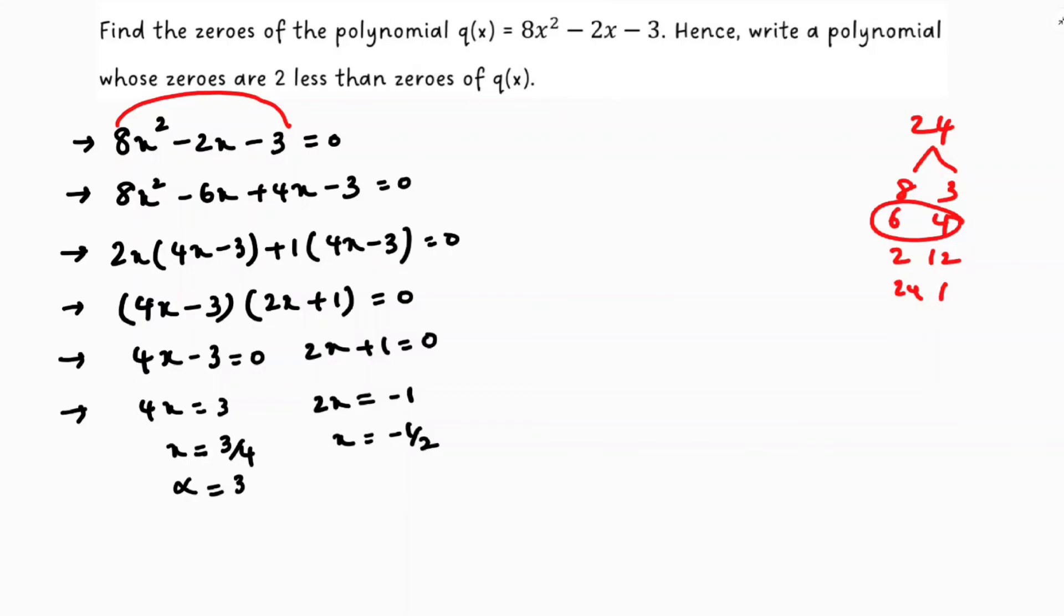Now here in the question clearly they mention that we need to write a polynomial whose zeros are 2 less than. So here I got zeros 3 by 4 and minus 1 by 2. I need to find a polynomial whose zeros are 2 less than the zeros of q(x).